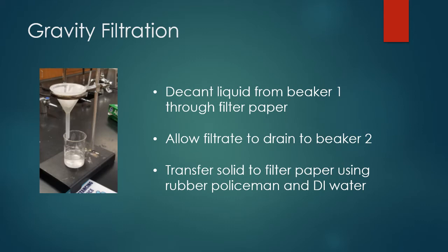Now for the gravity filtration. We're decanting the liquid from beaker one through the filter paper. By decanting, that means you're trying to pour off just the liquid and not get any solid. The reason for this is so that you're not clogging the filter paper, because if you put the solid in there first, it's going to get clogged and the gravity filtration is going to take much longer.